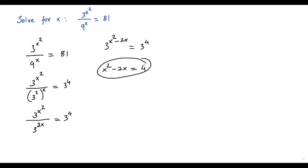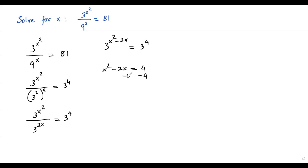We have a quadratic equation. To get it into standard form, we need x squared, x, and the constant term on the left side and 0 on the right side. Since we have 4 on the right side, we subtract 4 from both sides. This positive 4 and negative 4 cancel out, giving us x squared minus 2x minus 4 equals 0.